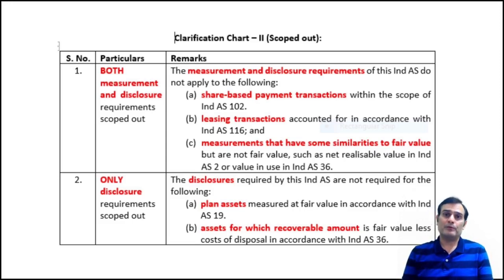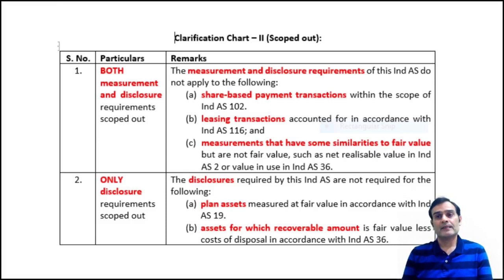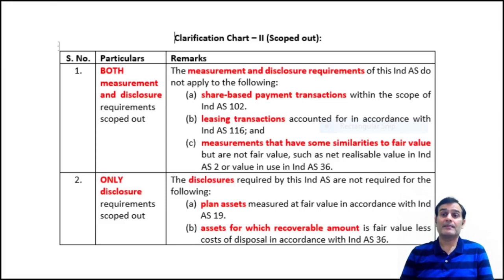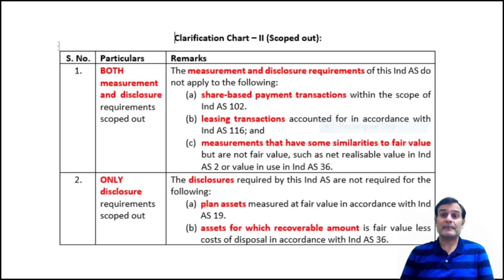There are also certain values in other Ind AS standards which are not fair value but are similar to fair value. For example, Ind AS 2 talks about inventory valuation at cost or NRV, whichever is less. Ind AS 36, which deals with impairment, talks about calculation of recoverable amount, which considers the concept of fair value less cost to sell. These kinds of values have something similar to fair value computations but are not covered under Ind AS 113.